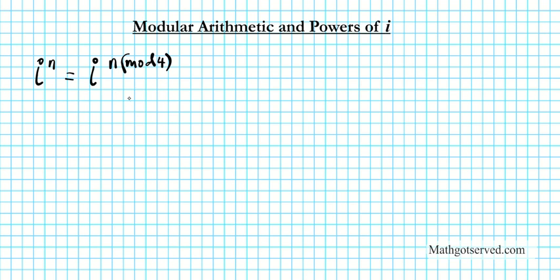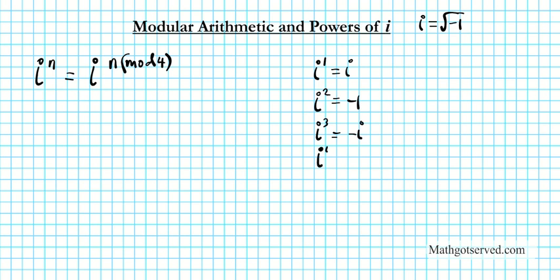This formula captures the fact that when you raise i to any power, there is a cyclical pattern that happens if you exceed the 4th power. So let's write down what that means. i to the 1st power is simply i. Remember, i is the square root of negative 1. i to the 2nd power is negative 1. i to the 3rd power is the product of these two, which is negative i. And i to the 4th power is i squared times itself, which is negative 1 times negative 1, which is 1. It is important that you have these four powers of i memorized because this pattern keeps repeating itself. If that is too much, you can memorize the first two and use those to derive the other two.